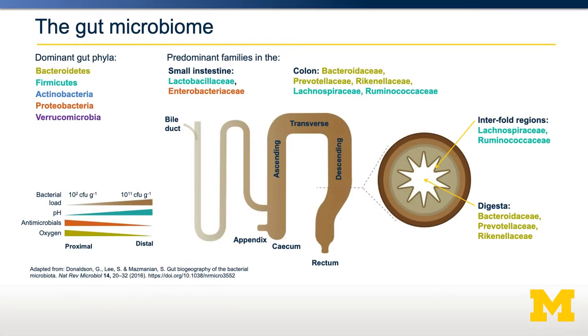Within our gut, the microbiome plays an important role in both digestion and inflammation. Shown in the diagram in the center is the gastrointestinal tract, starting at the small intestine and finishing with the rectum. As it gets darker, the bacterial load increases. Importantly, as that changes, the pH also increases while the level of oxygen decreases. This environment of low oxygen and relatively high pH is important for understanding which bacteria are prevalent in the colon versus the small intestine.